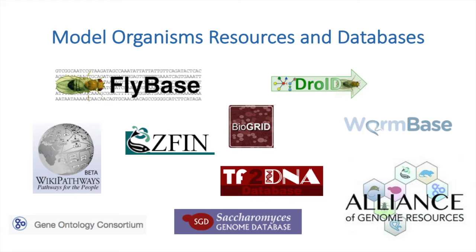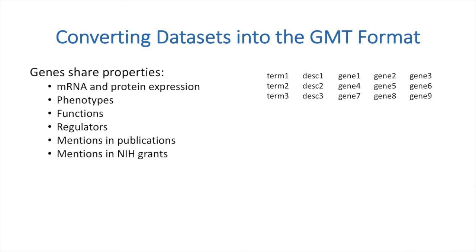Biological data of different types is being stored and cataloged in a variety of different locations. There is a continued effort to consolidate data for the purpose of integration, hypothesis testing, and inference. Data collected through a variety of experiments can be integrated by shared properties. For example, gene knockout experiments often result in an observed phenotype, and it may be that the same phenotype is observed when other genes are knocked out in the same system. Those genes share a property, namely the phenotype observed.